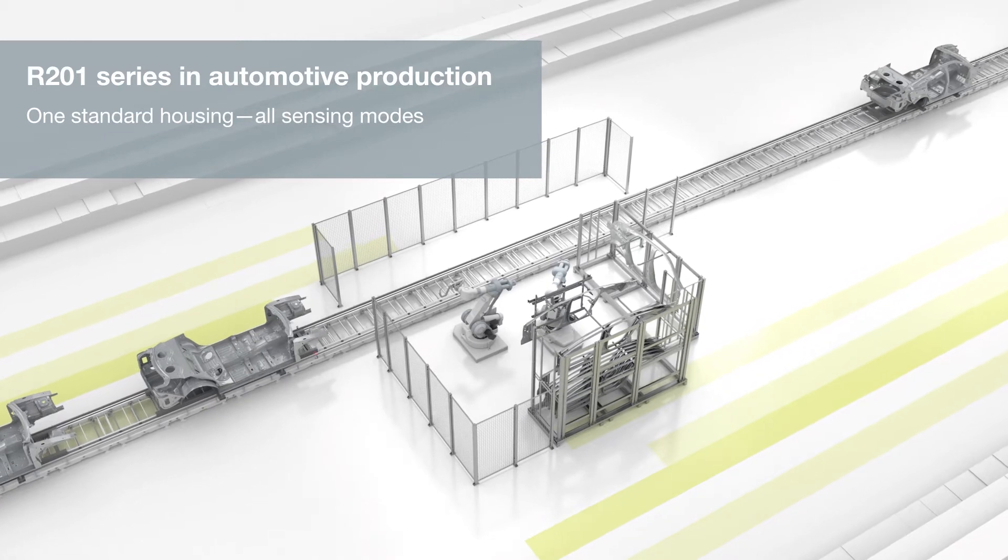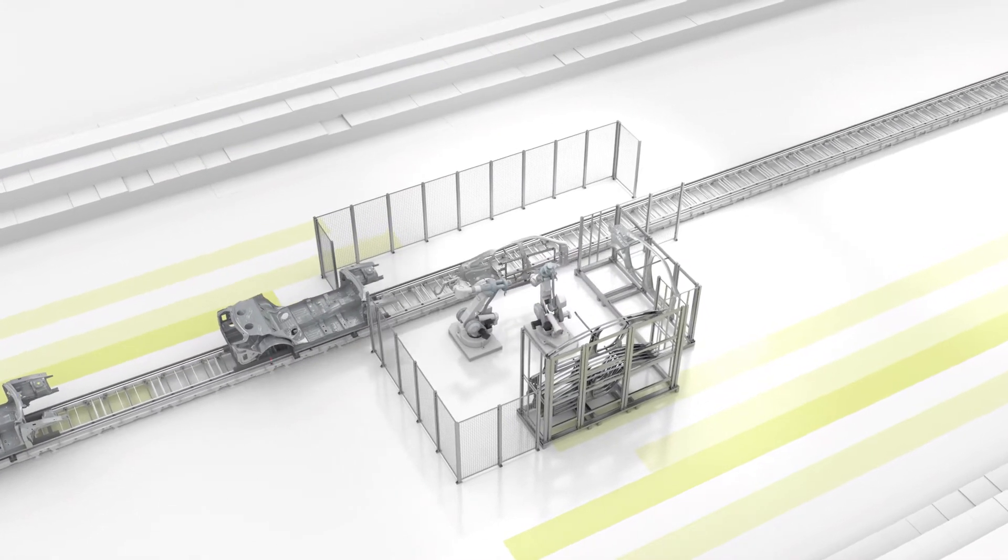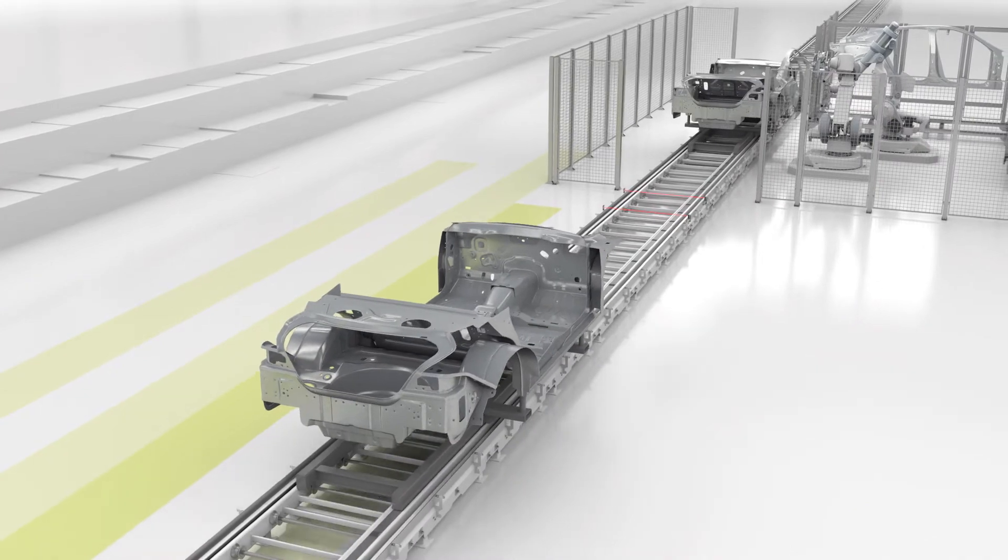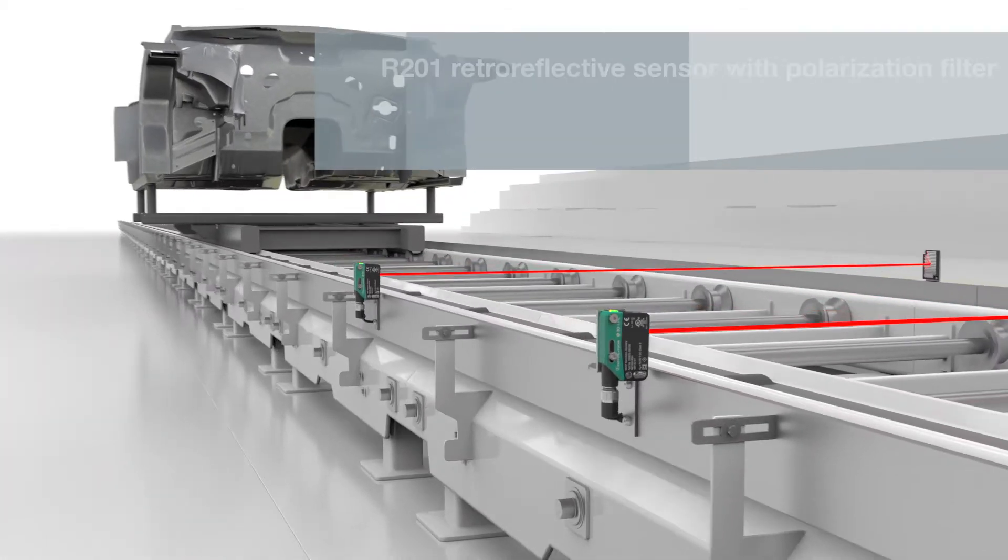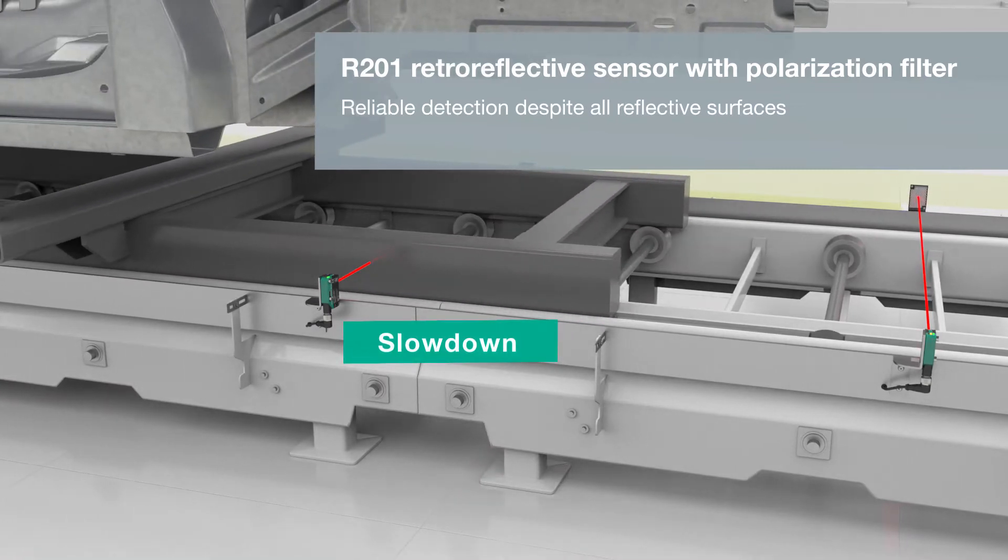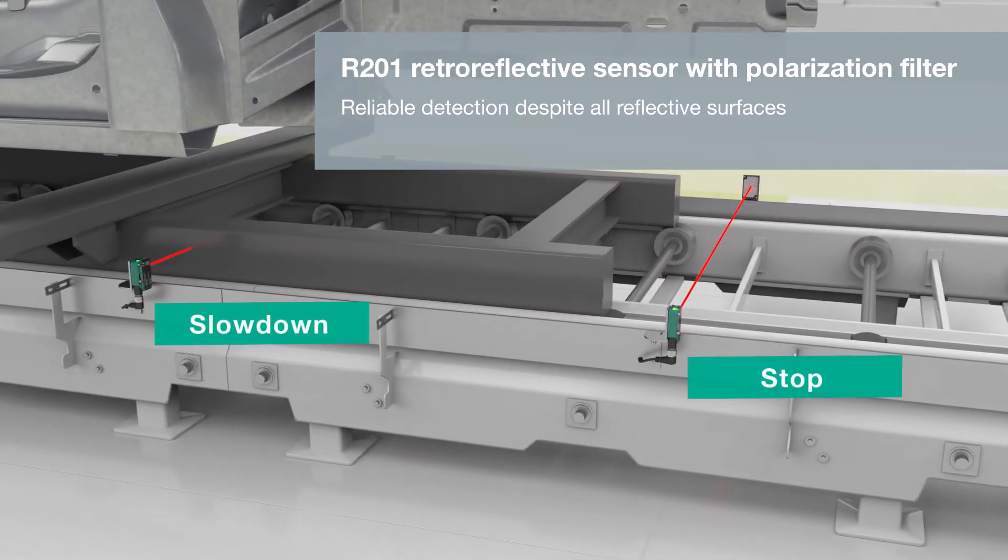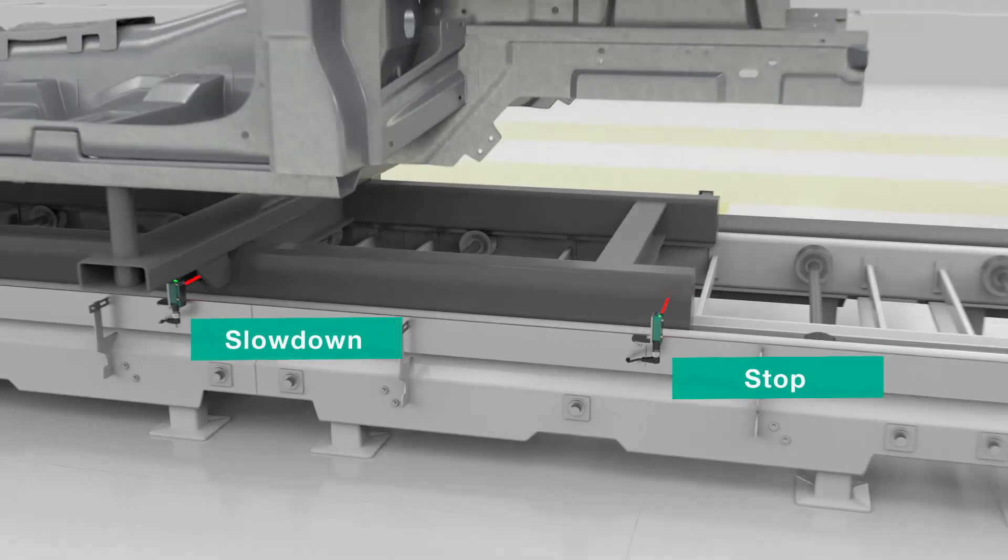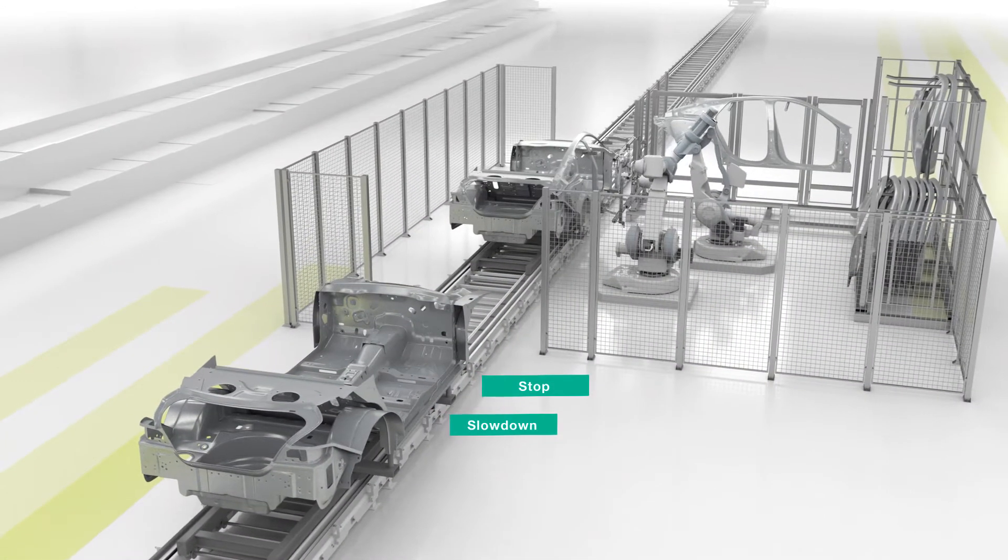The R201 series, for example, is suitable for a wide range of applications in automotive production. During the coordinated delivery of skids, reliable position detection is critical. With the R201 series retro-reflective sensors, even very shiny parts are reliably detected.